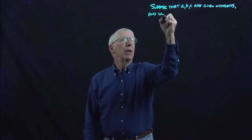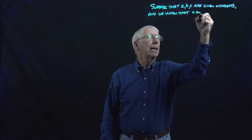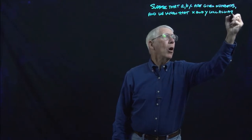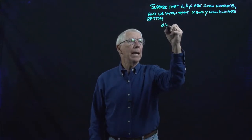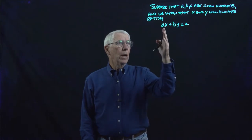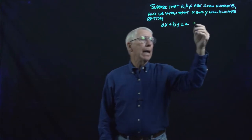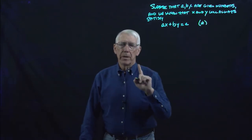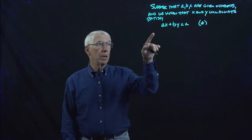Let's also suppose we know that X and Y will always satisfy the equation AX plus BY equals C. X and Y here are just variables, real numbers. Let's refer to this equation as star. The implicit function theorem addresses two questions that naturally arise about this situation.